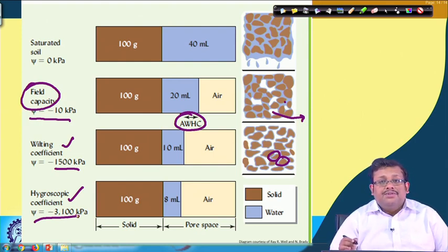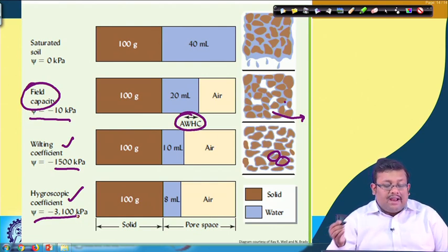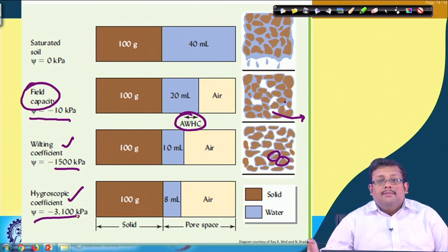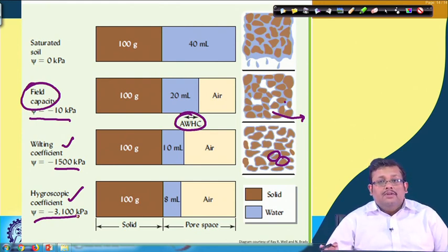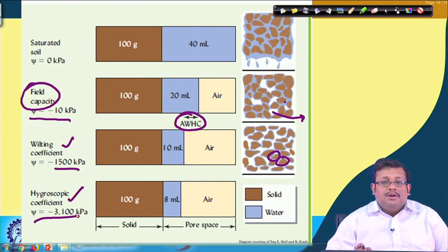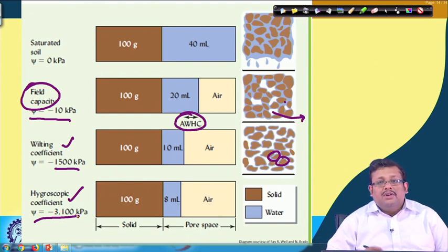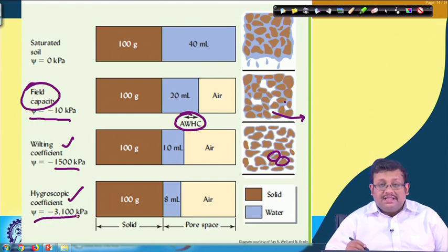To summarize: starting from a saturated soil where all pores are filled, applying suction causes gravitational water to drain out, reaching field capacity at a potential of −10 to −30 kPa. Further drying reaches the wilting coefficient at −1500 kPa. The difference between field capacity and wilting coefficient is the available water content — plant-available water. Below the wilting coefficient at the hygroscopic coefficient, only a small amount of water is structurally attached to the clay particles.